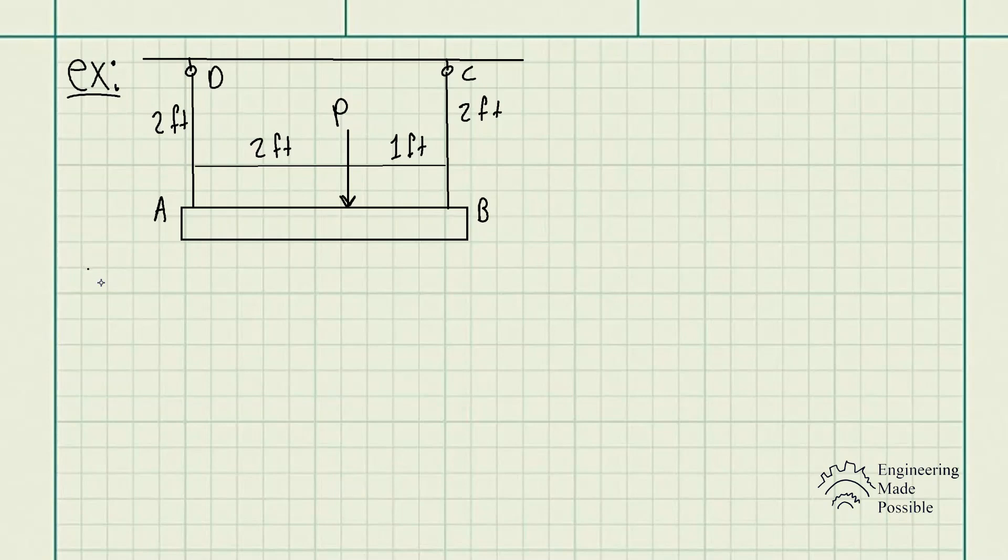For 304 stainless steel, we have the modulus of elasticity being 28 million pounds per square inch (PSI). Now first things first, we could go ahead and solve for the tensions in each of these cables with respect to this variable P, because keep in mind we're trying to solve for this variable.